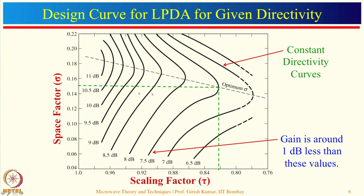Books label these as directivity curves, but based on experience, gain is generally 1 dB less than these values. So if you want a gain of 6.5 dB, choose the 7.5 dB directivity curve. If you want a gain of 8 dB, choose the corresponding higher curve.